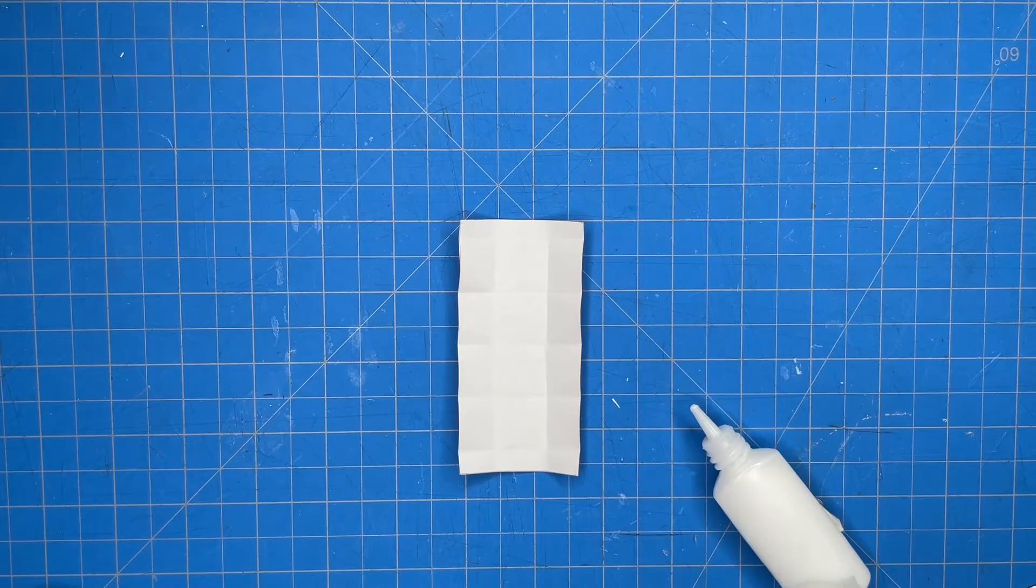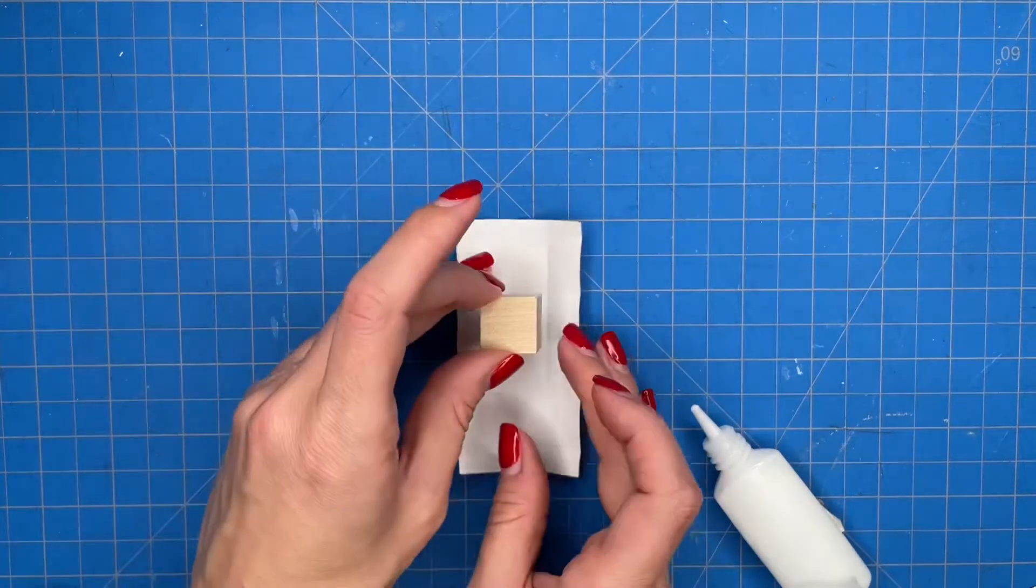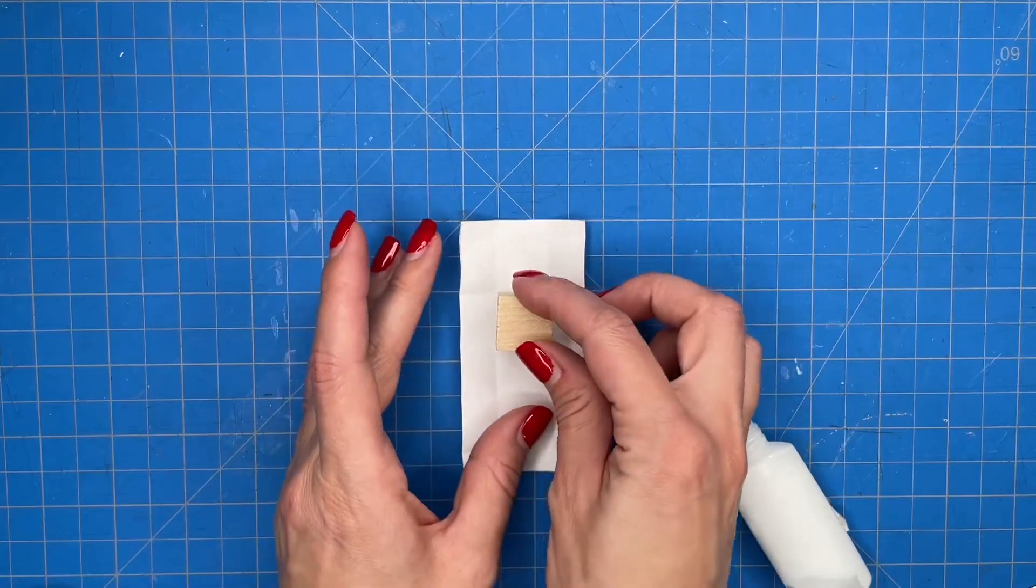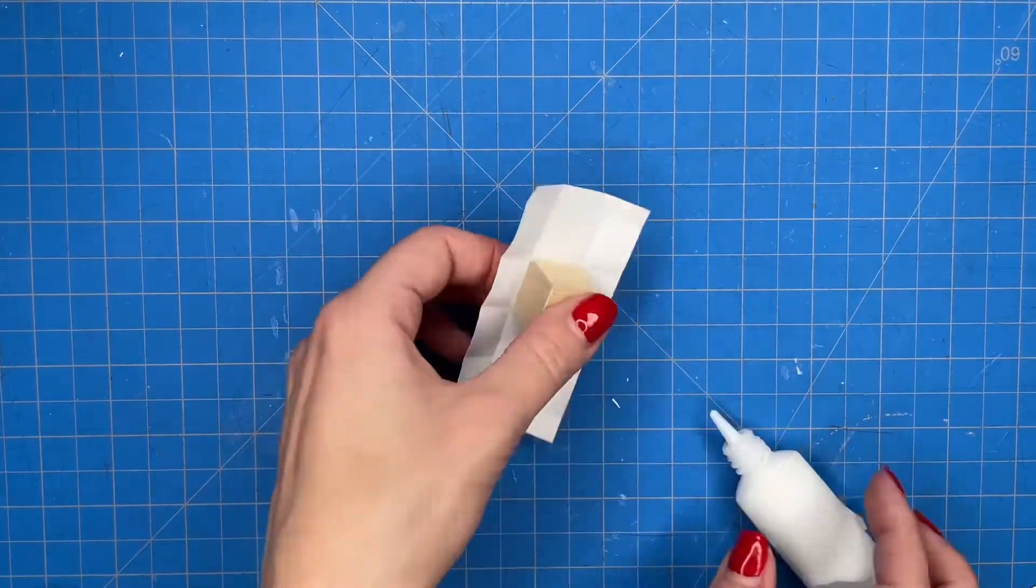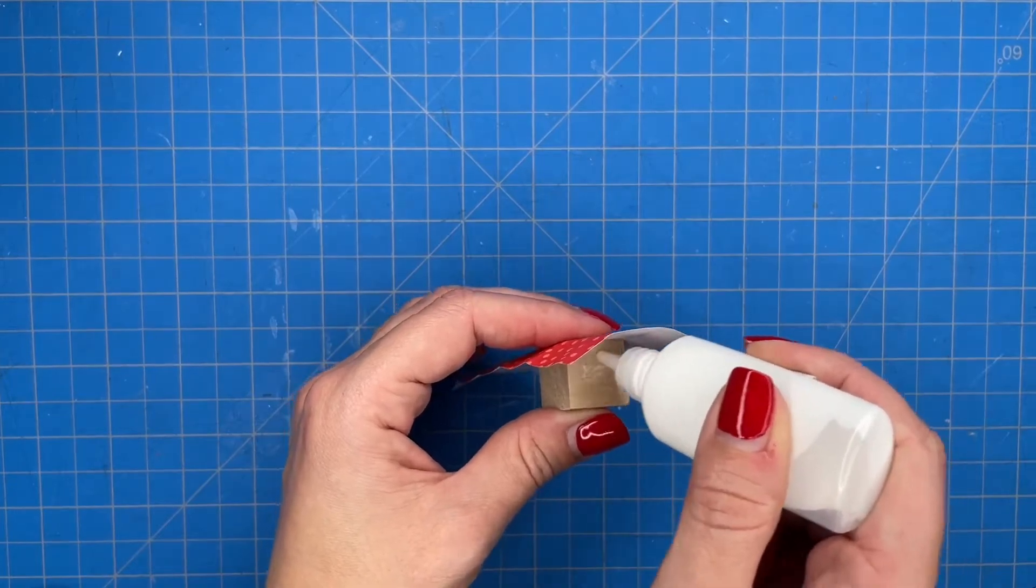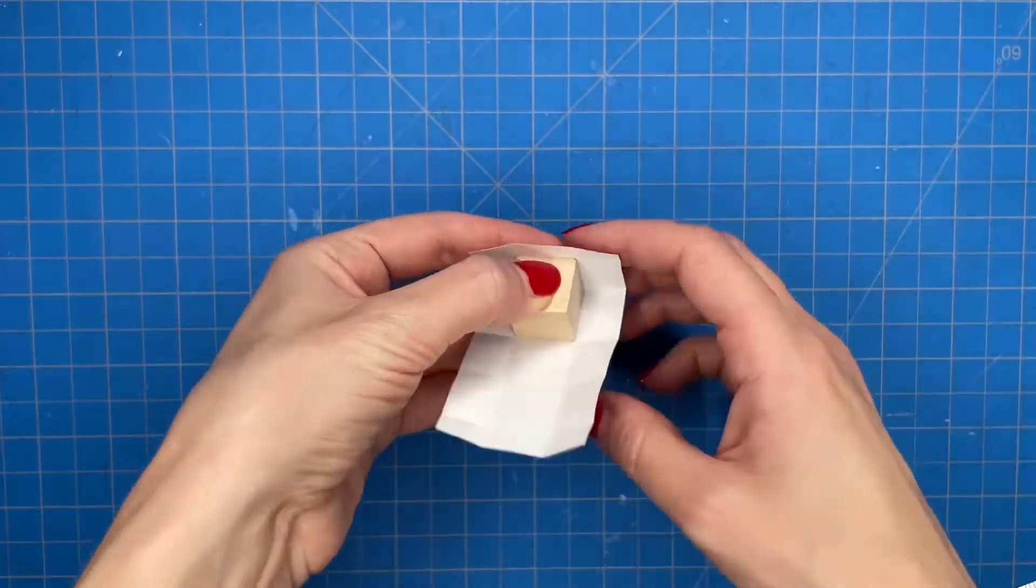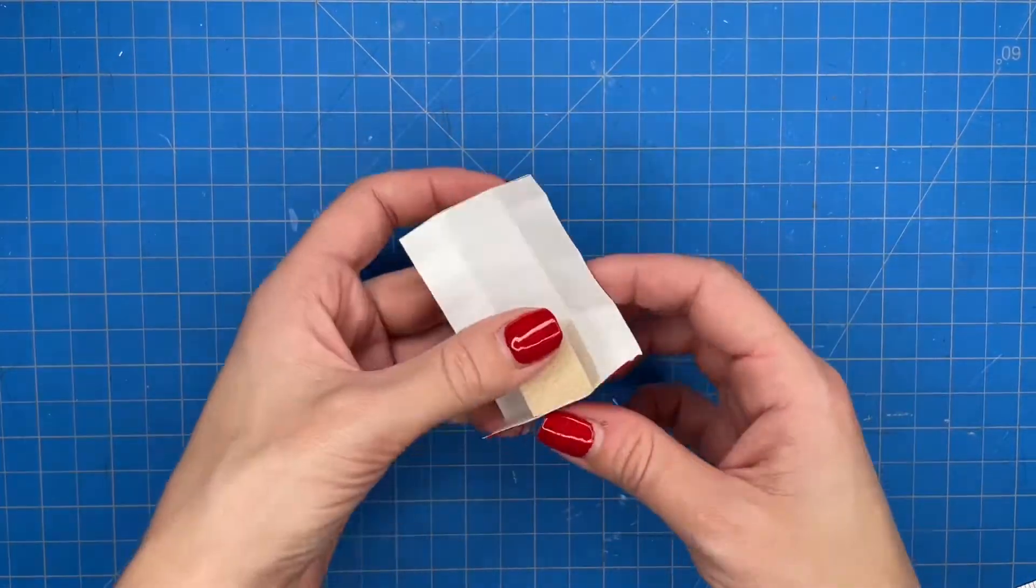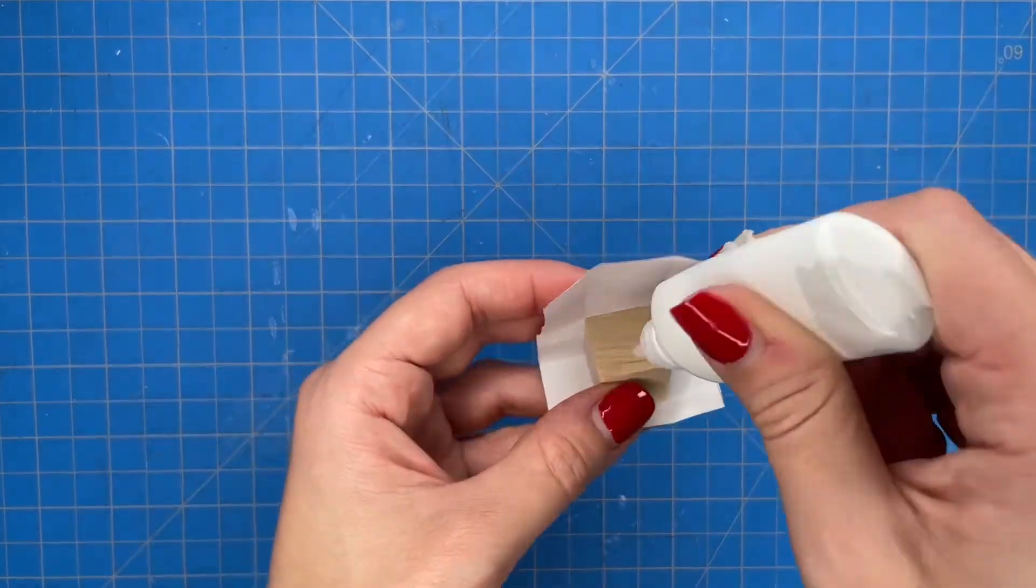And then I apply some glue to the wooden block and you want to make sure that it is very thin before you apply it to the paper just so that your paper doesn't start warping or have any wrinkles. And to help with that I do use a toothpick just to even out the glue so it doesn't all clump to one side.